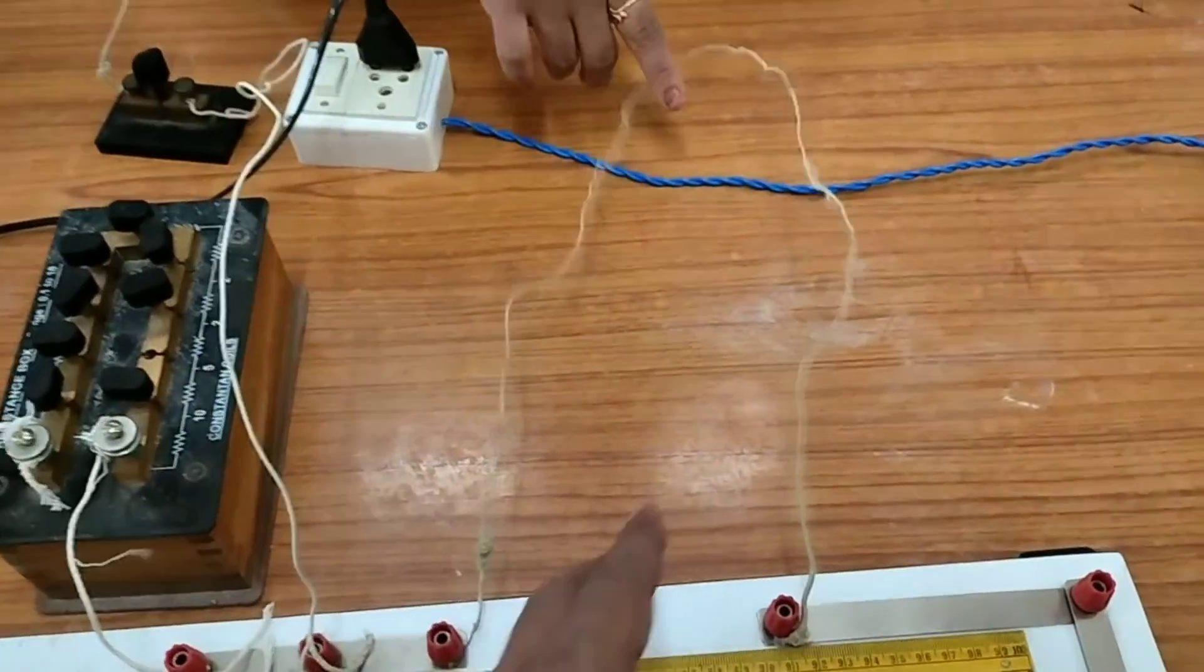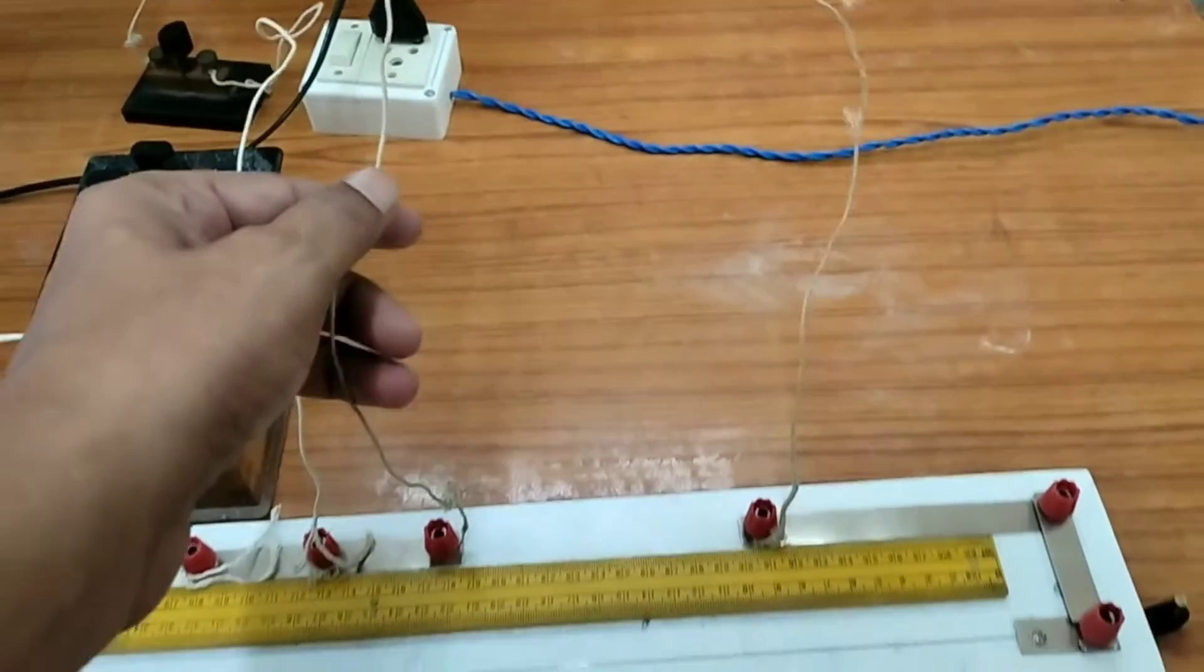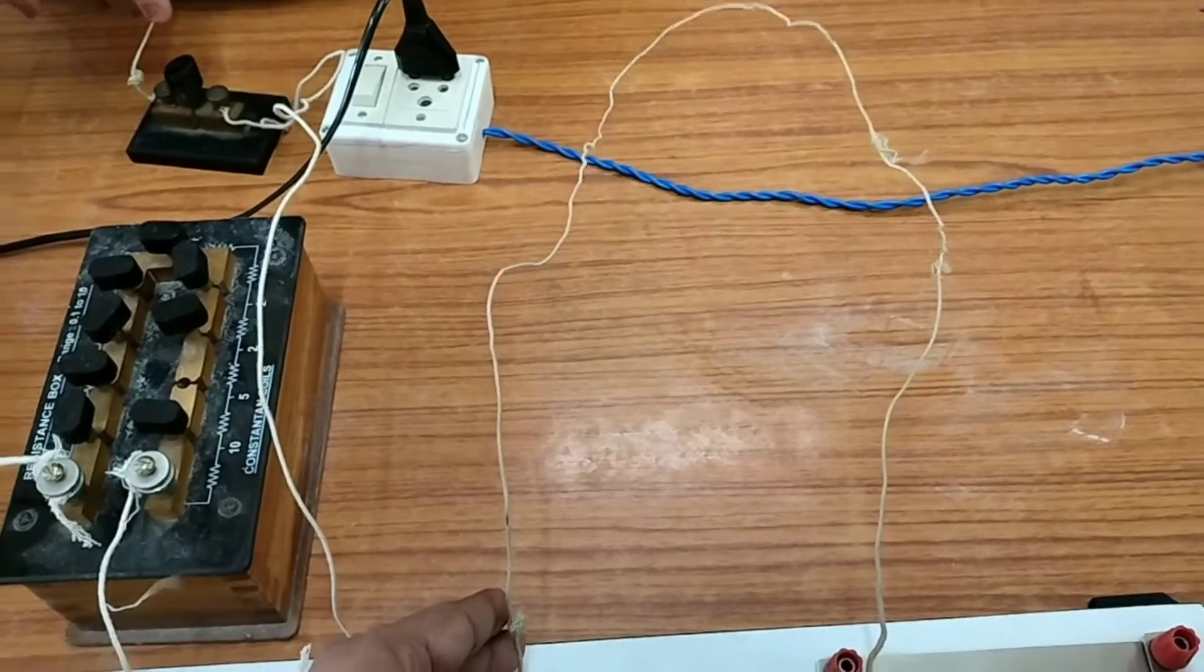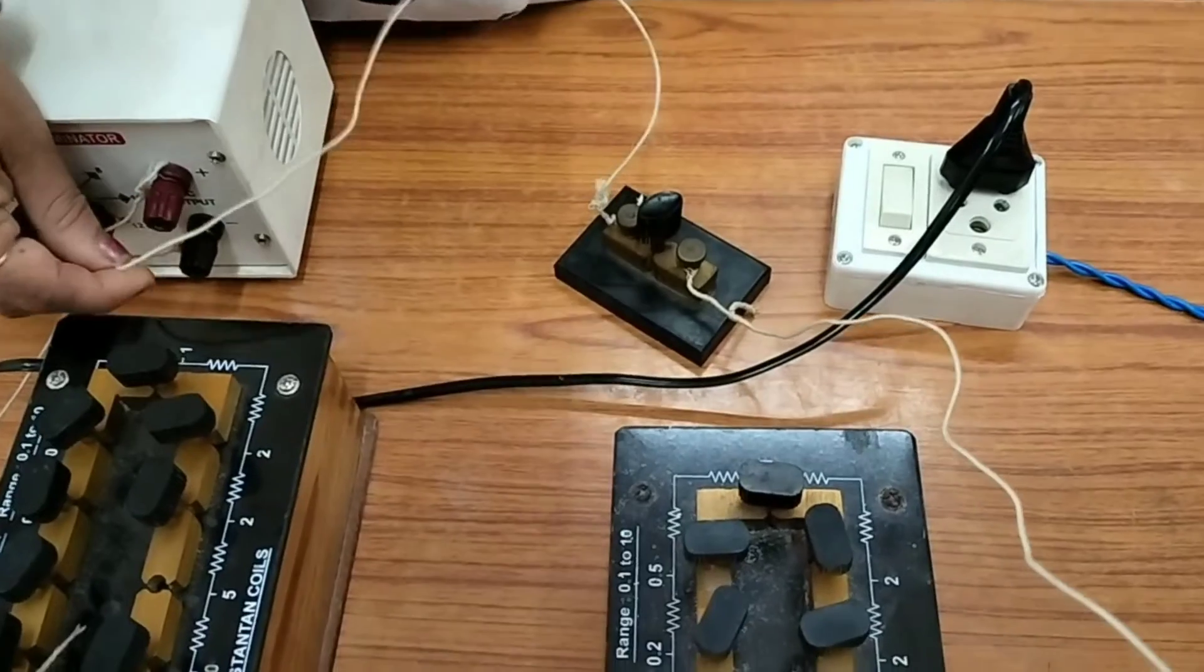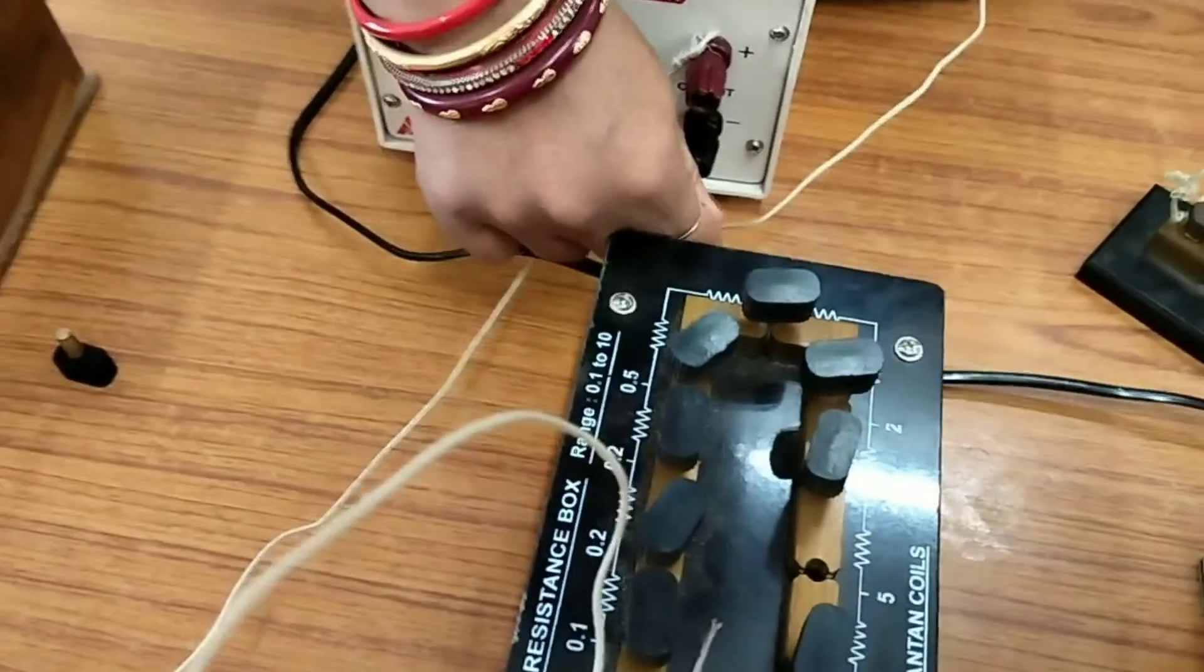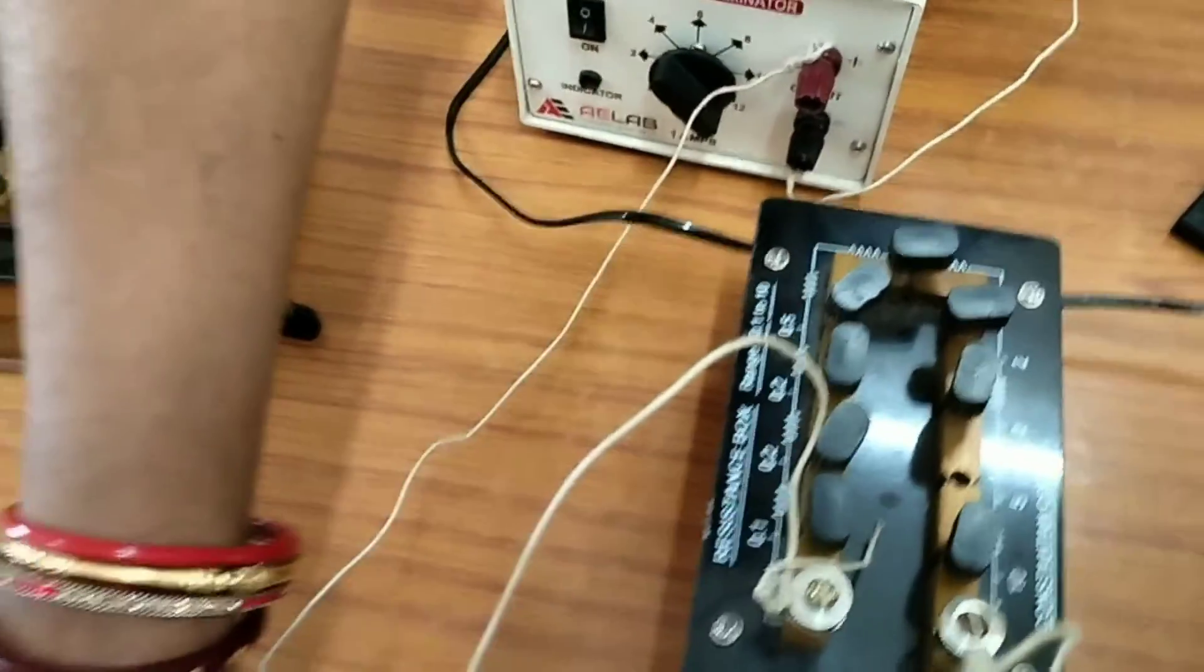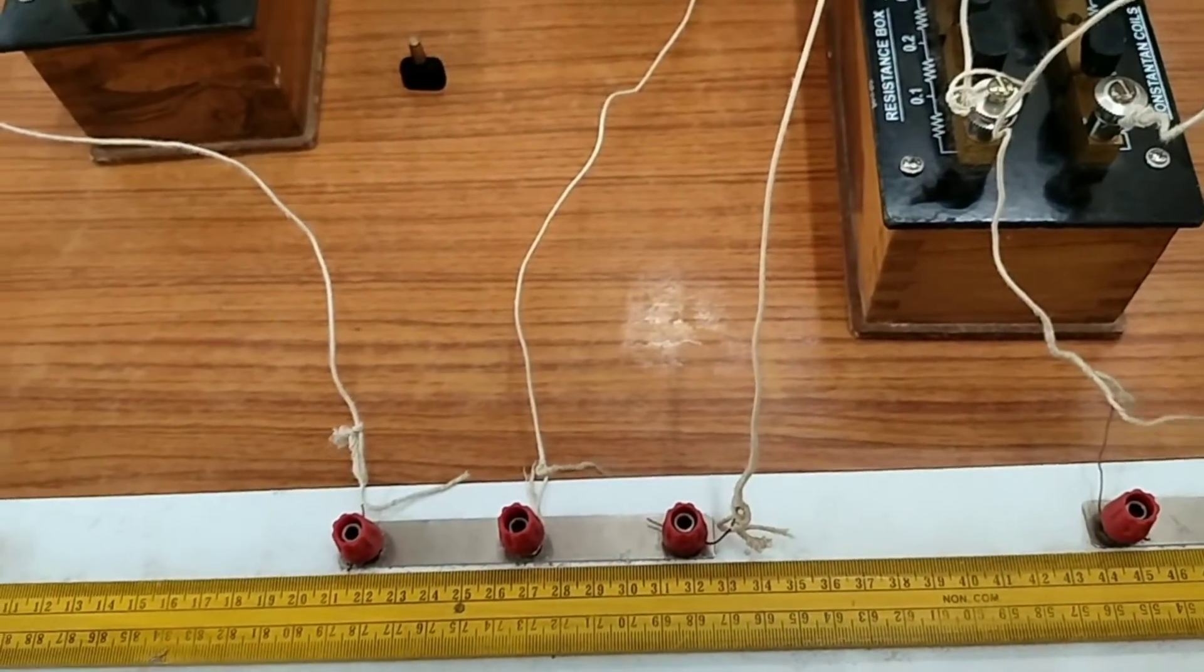And this is the experimental wire whose resistance we want to calculate or we want to find out in this experiment. And you connect a source through this key - I have connected an eliminator. I have taken 4 volt and this is the connection of the eliminator.